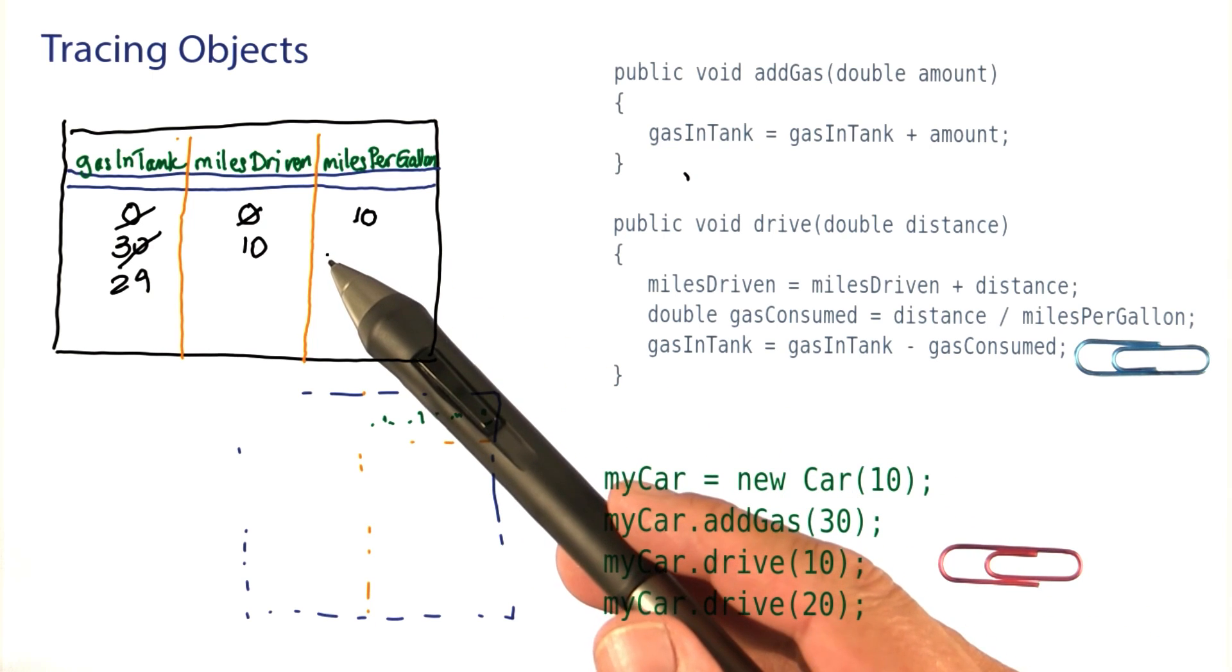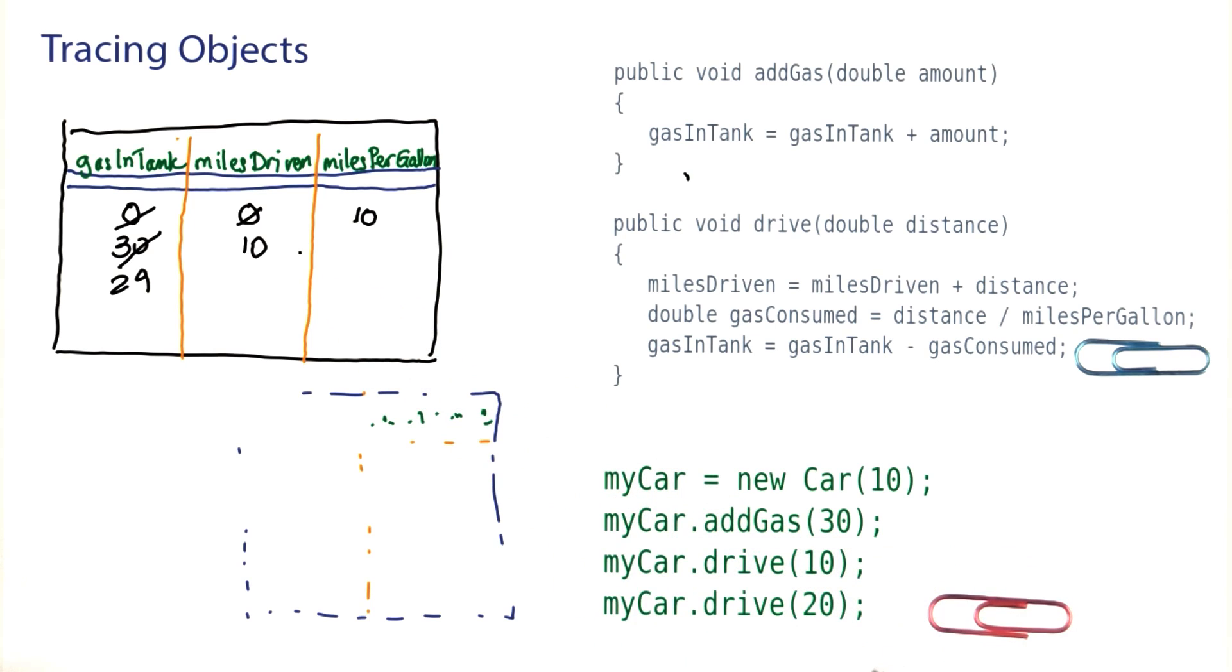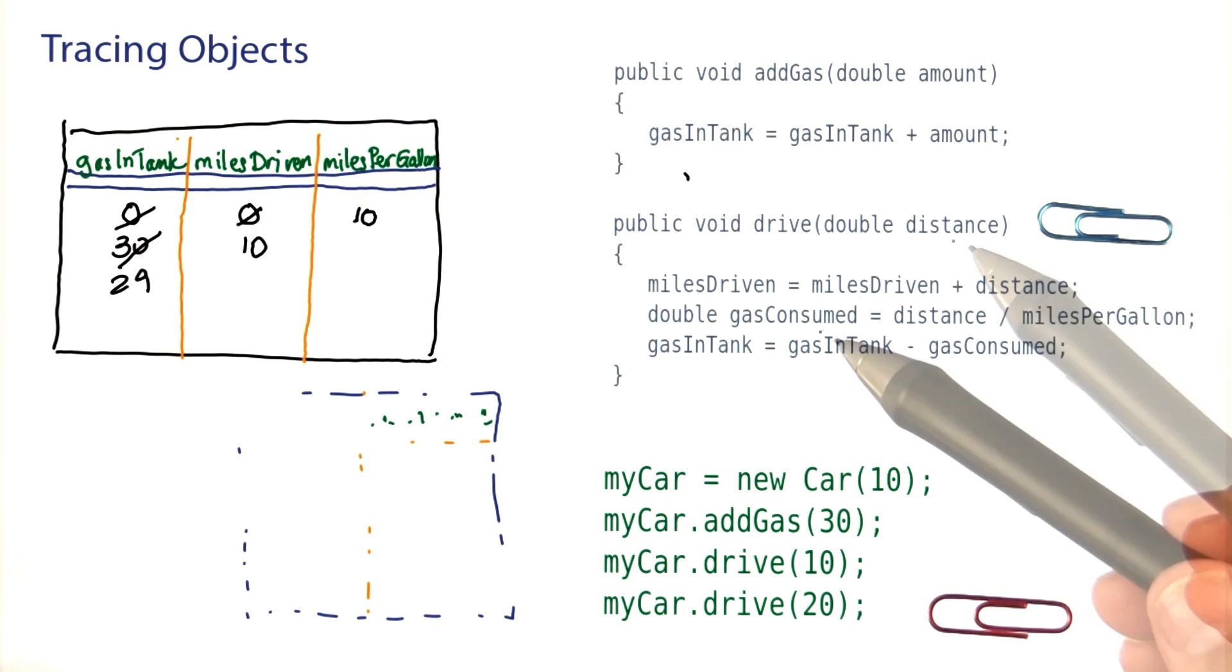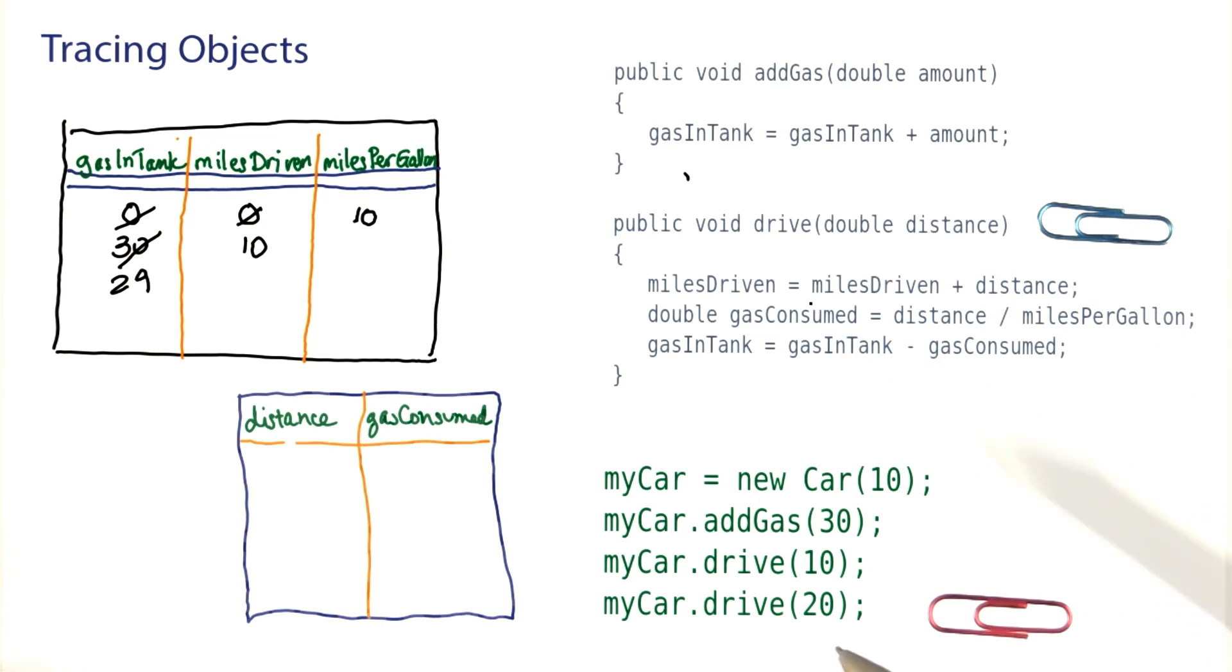Of course the instance variables, the long term memory of the object, they stay around. Now here we are in the next method call. We're calling the drive method again. That means that this local variable and this one here will get recreated. Of course this time the distance is 20. Now let's see.